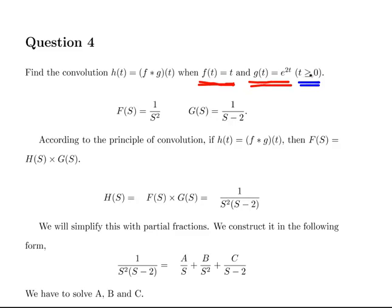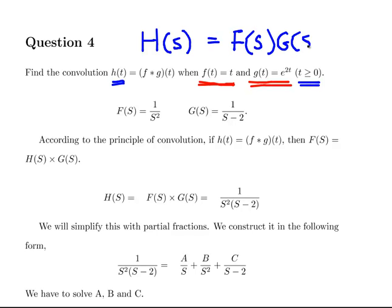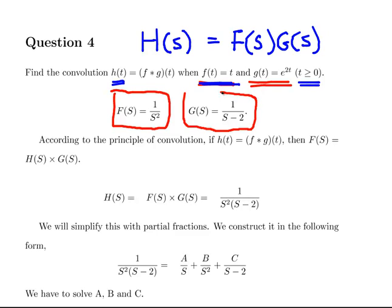In your answers, it is important to put this down for t greater than or equal to zero, because this doesn't make sense for t less than zero. Our approach is going to be to find H(s) and get the inverse Laplace transform of that. H(s) is the product of F(s) times G(s). We get the Laplace transform of f and g — those are straight out of the formula sheet, very simple ones right up the top.